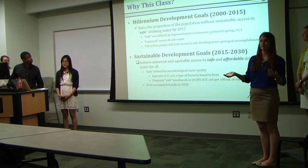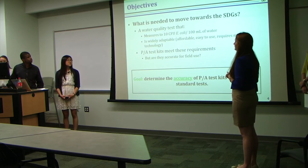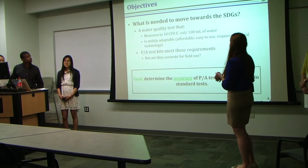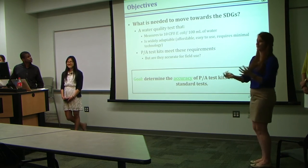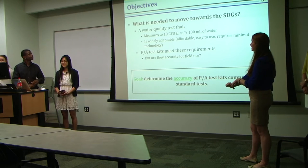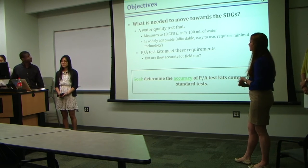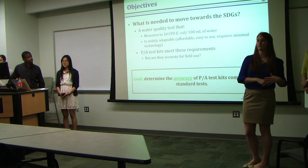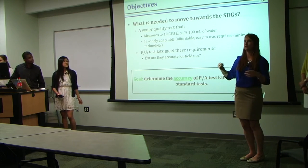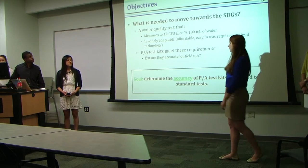Our objective as a team was to decide what's needed to move towards these Sustainable Development Goals. We came up with the idea—really Dr. Brown came up with it—that a water quality test is needed to measure up to 10 colony forming units of E. coli per 100 milliliters of water, that is widely adaptable, affordable, easy to use, and requires minimal technology. This is a necessity because it's got to be used in places like Africa, South America, Southeast Asia, and all around the world.